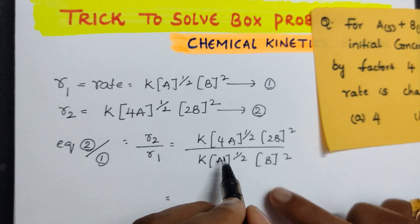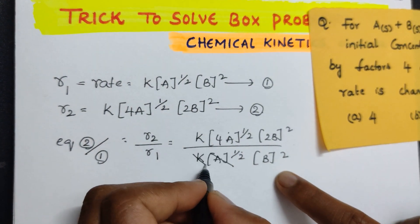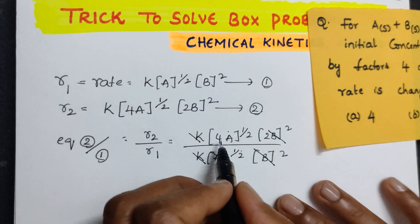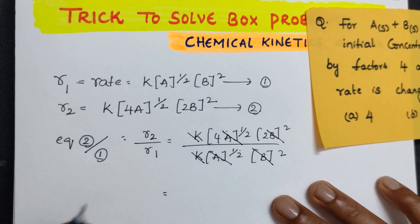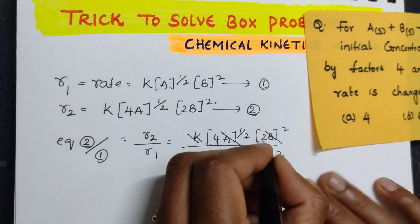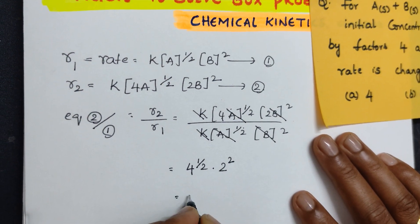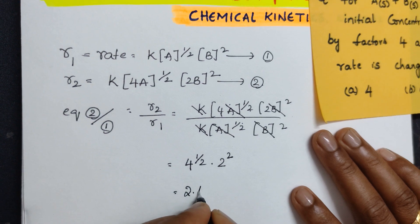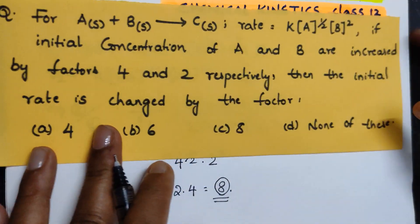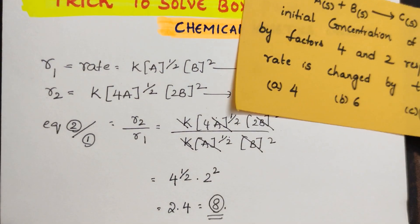This is the textbook methodology. Taking r2 by r1: k cancels, [A]^(1/2) cancels, [B]^2 cancels. What remains is 4^(1/2) and 2^2. Root of 4 is 2, and 2 squared is 4, so 2 × 4 = 8. The initial rate was increased by 8 times, so option C is the correct answer.